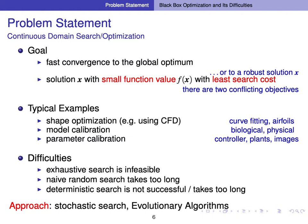The difficulty of continuous domain search is that exhaustive search is infeasible because the search space is too large, and for the same reason naive random search takes usually way too long. We have deterministic search methods, but sometimes they are not successful and sometimes also take too long. In this case, we look into other methods like evolutionary algorithms.